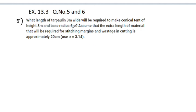What length of tarpaulin 3 meters wide will be required to make a conical tent of height h meters and base radius 6 meters? The tarpaulin is 3 meters wide. Assume that the extra length of material required for stitching margins and wastage is approximately 20 cm.